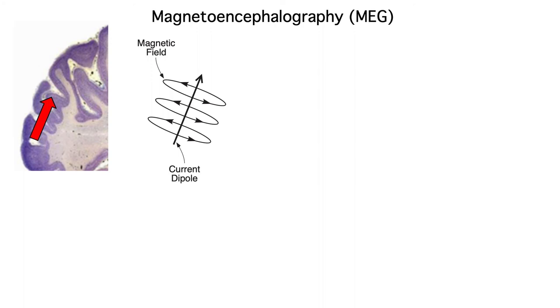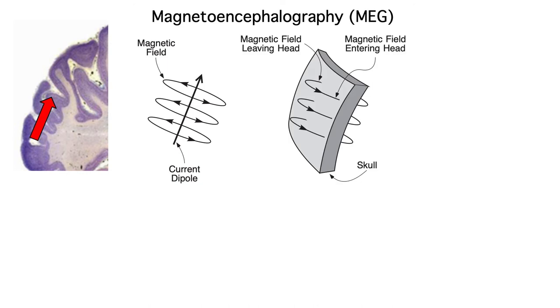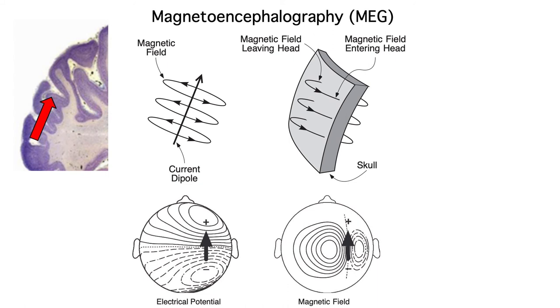If a dipole lies right underneath the skull, the magnetic field will exit the skull and enter again, and the strength of this magnetic field will go up and down along with the EEG. The magnetic field outside the head runs perpendicular to the electric field on the scalp.